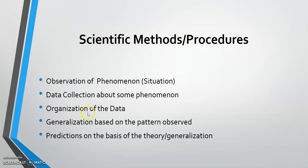The third scientific method is organization of the data. Based on the data collected, you organize it to identify a pattern or trend. For instance, an increase in price led to less quantity demanded, and a decrease in price led to more quantity demanded. In terms of supply, when price was high, suppliers supplied more; when price reduced, they supplied less.